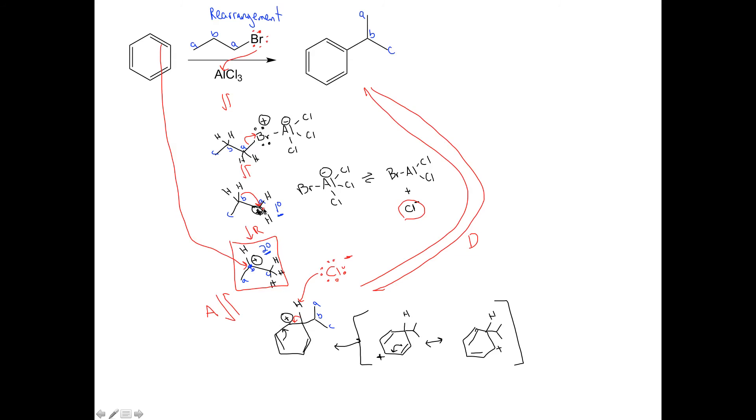This is not the most stable carbocation we can form. A rearrangement occurs. This is really a key step to form my secondary carbocation. Your aromatic ring, a pi bond, will now attack that. Here's my new bond from the aromatic ring to carbon B because of the rearrangement.